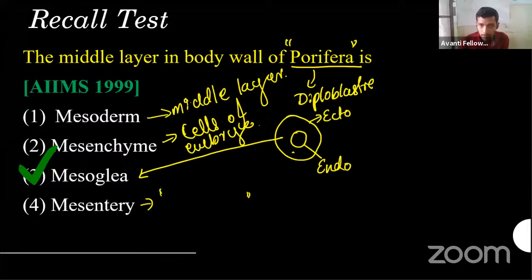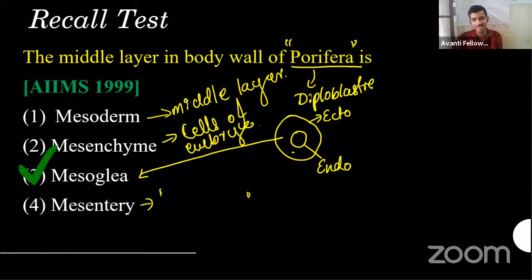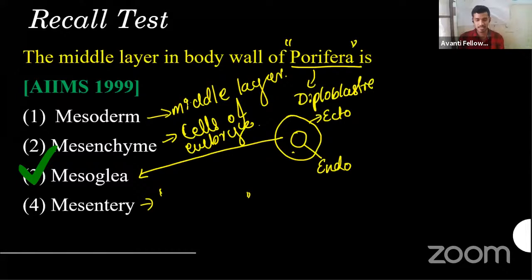'Diplo' means two, and 'blast' means the layer in the blastula stage — an embryonic stage. The cells of the embryo are loosely packaged, like parenchyma — we normally use parenchyma in plants but very few times in animals also. In the embryonic layer it will only have two layers of cells — absolutely correct.